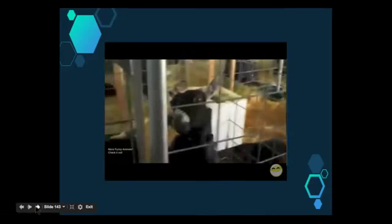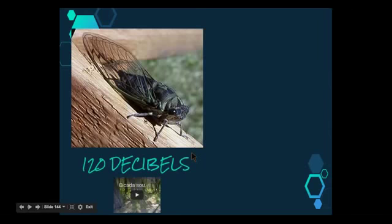Cicadas, for example, produce sounds that are so loud, 120 decibels, that it can be painful to the human ear. The volume is equivalent to thunder, a jet plane, or even a chainsaw.